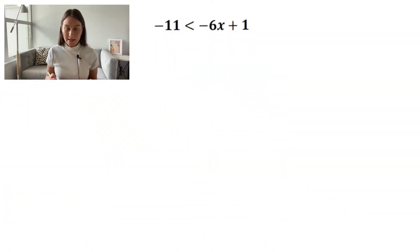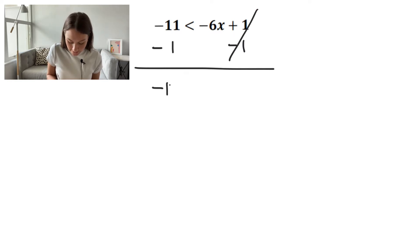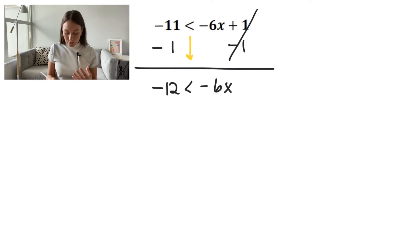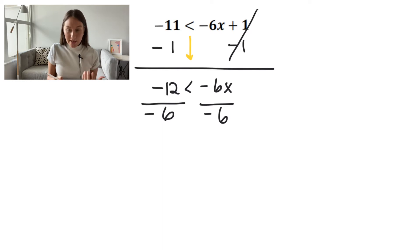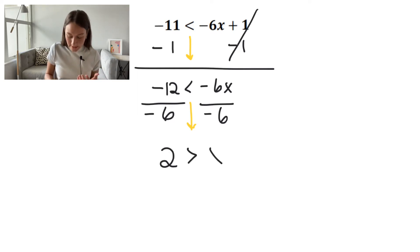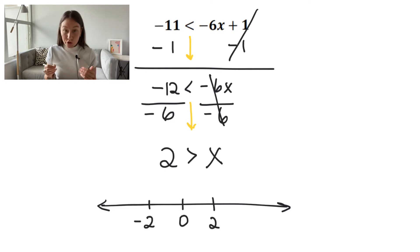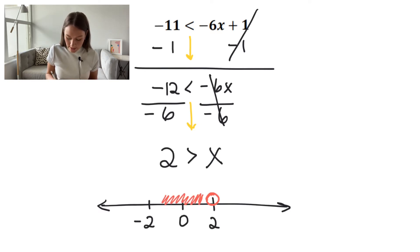Here we have negative 11 is less than negative 6X plus 1. I'm going to get all my numbers to one side and my variables to the other. I'll subtract 1 from both sides: negative 11 plus negative 1 is negative 12. Keep the sign the same since I didn't multiply or divide by a negative — so negative 12 is less than negative 6X. Now I divide by negative 6, and since I'm dividing by a negative number, I flip the sign. Negative 12 divided by negative 6 gives me 2, and now 2 is greater than X. I plot an open circle at 2 on the number line — X has to be less than 2, and it cannot be 2. The range goes from 2 all the way to the left: negative 1, negative 2, negative 3, and so on.